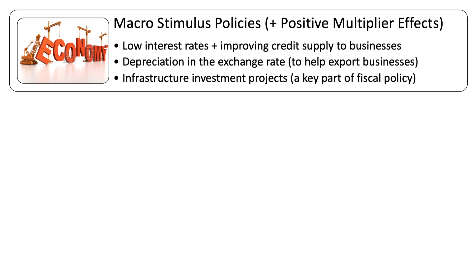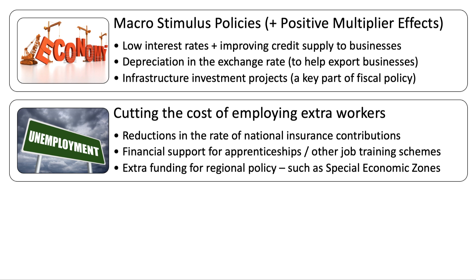Fiscal policy can also be used on the macro side. In particular, governments often favor fast-forwarding multi-billion pound and dollar infrastructure investment projects — new bridges, new roads, new telecom systems, improved flood defense systems, and so on. Fiscal stimulus through infrastructure investment can be a key macro policy.